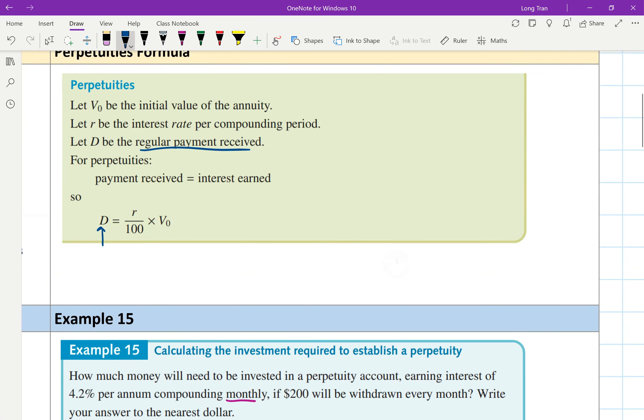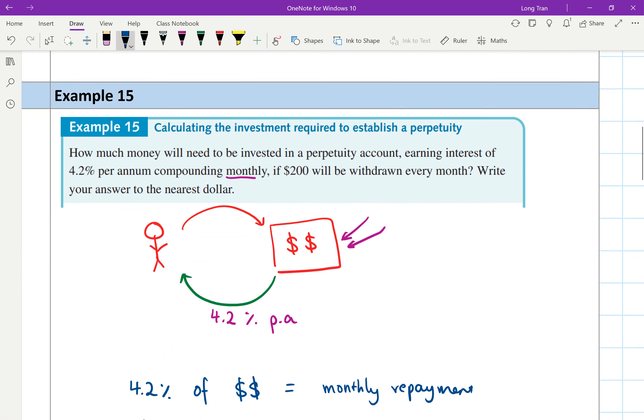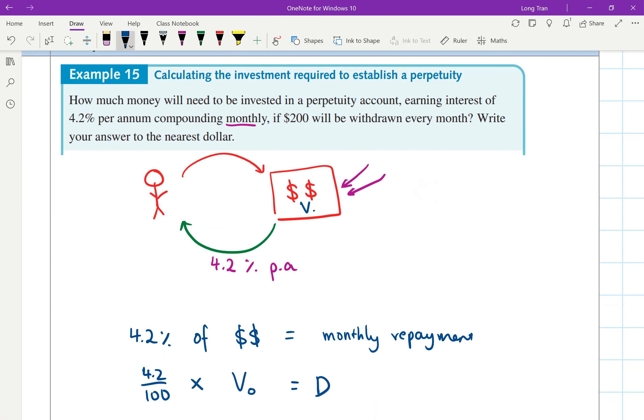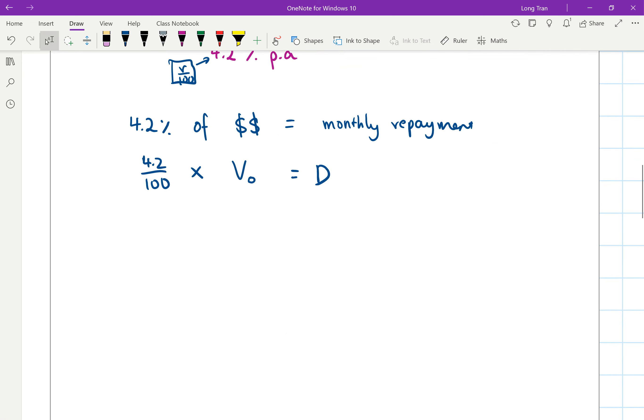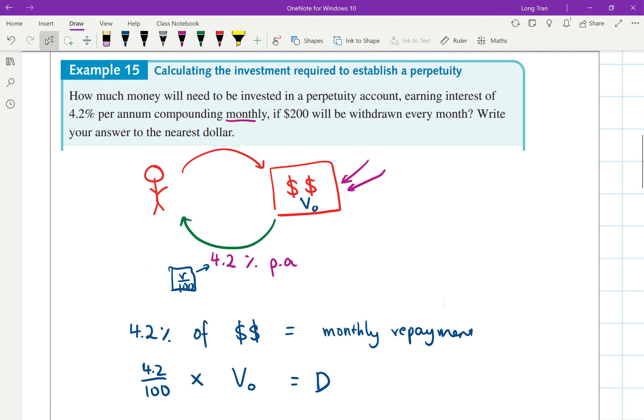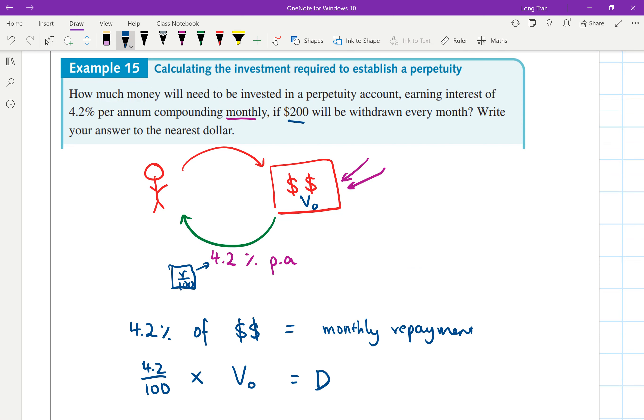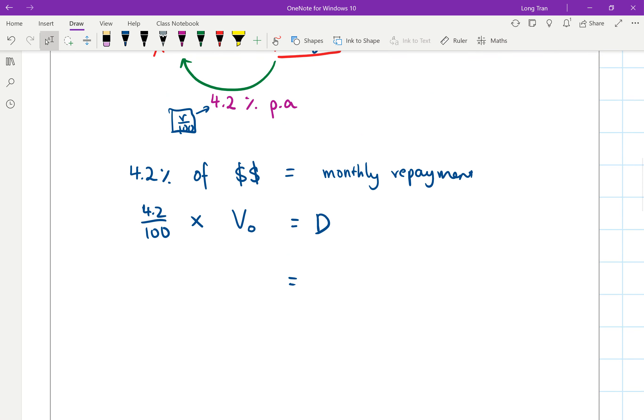V₀ is the amount that you invested into the account which we didn't know. So this is V₀, this is our R over 100, and D is the amount. How much do we want to get back every month? In this case, if $200 will be withdrawn every month, that means we know that the amount you're getting back is $200. You got 4.2 over 100 multiplied to V₀, and V₀ tells you the investment that you're putting in.